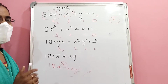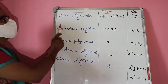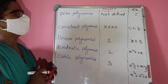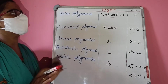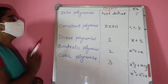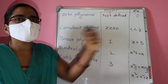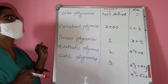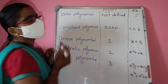Next, types of polynomials. Zero polynomial means just the number 0. If you have only 0, that is called a zero polynomial, and its degree is not defined. Constant polynomial means any numeral such as minus 1, 2, or 1/2. If you take any numeral, that is called a constant polynomial, and its variable power is 0, so its degree is 0.